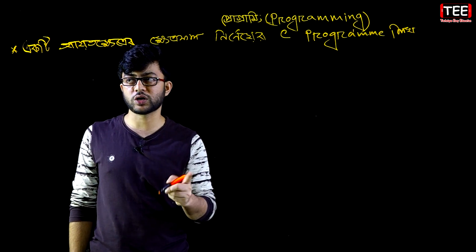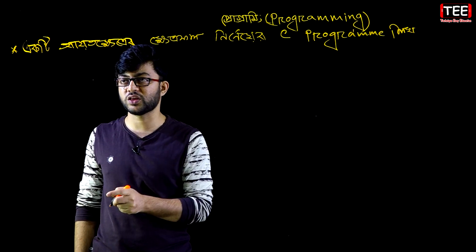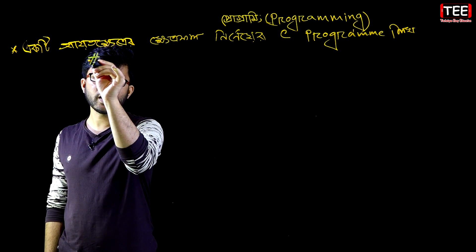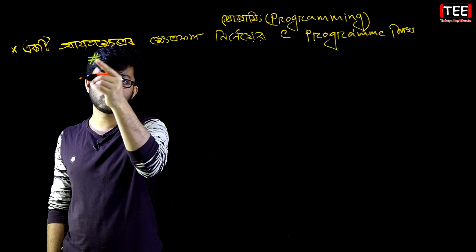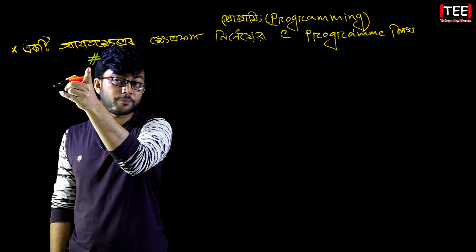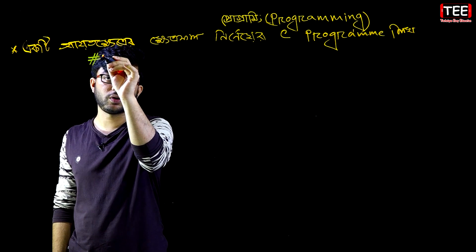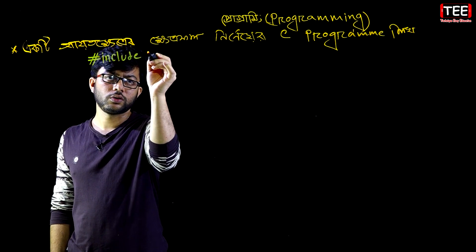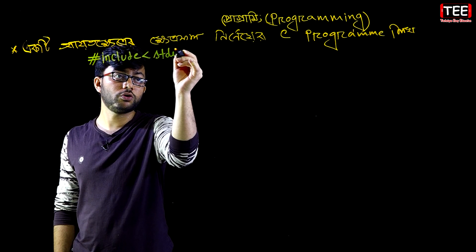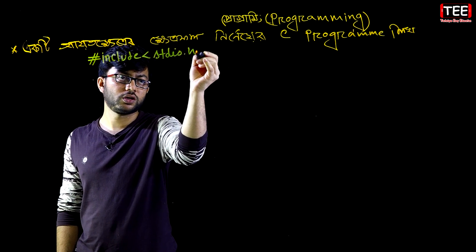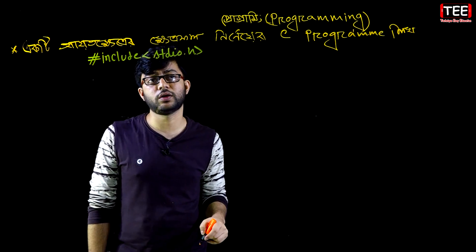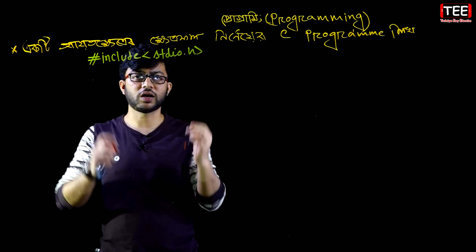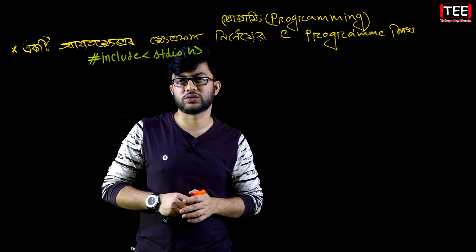So I will see the previous part as well. We have to start the program, which is hash — the pre-processor directive — which is hash include, include stdio.h, which is the header file extension.